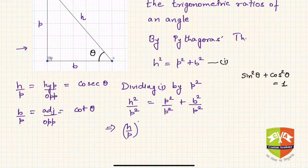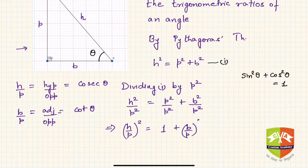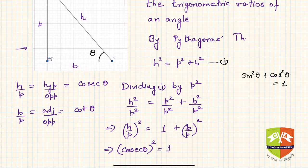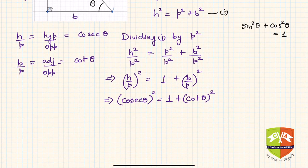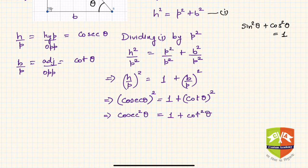So h upon p squared can be written as h by p whole square. This equals 1 plus b by p whole square. Since h by p is cosecant theta and b by p is cotangent theta, we get cosecant squared theta is equal to 1 plus cotangent squared theta.